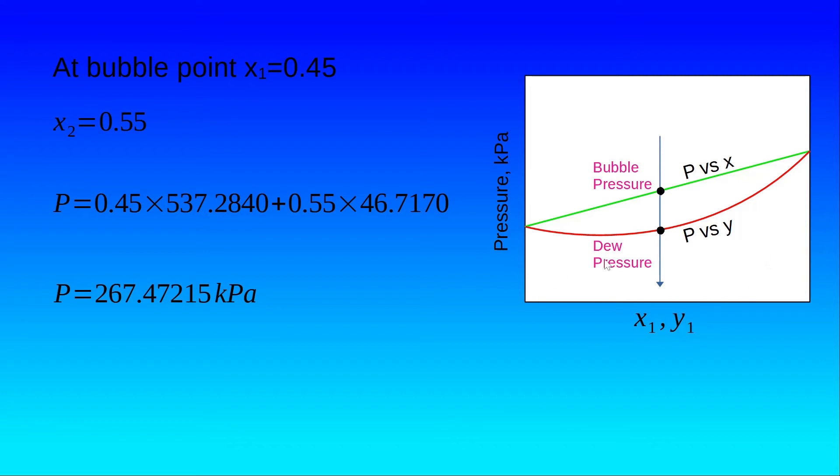Now let's assume we have a vapor which is at a very low pressure and has a concentration of heptane as 0.45 mole fraction. Now if we increase the pressure on this vapor, we will come to this point where the first dew drops will be formed in the vapor. This is the beginning of condensation. So this point is also known as the dew pressure.